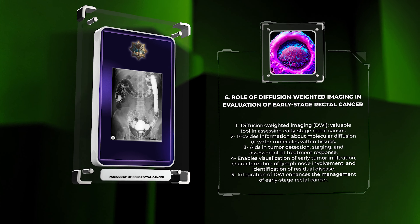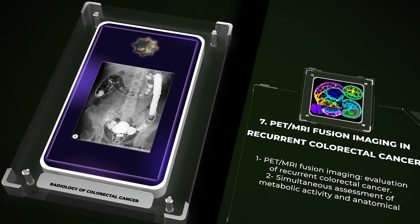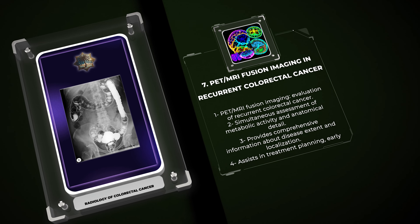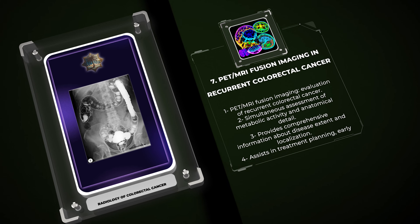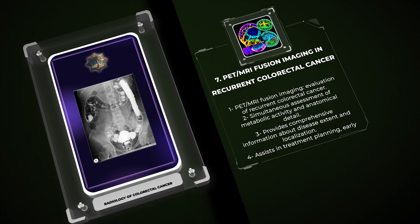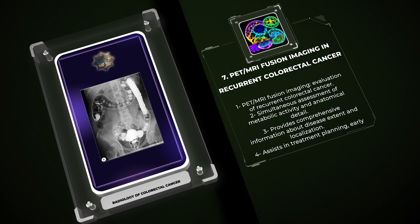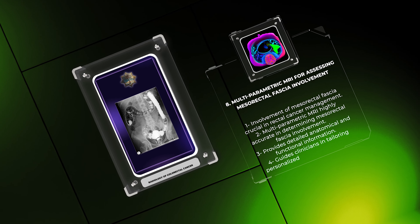The combination of positron emission tomography (PET) and MRI through fusion imaging has emerged as a powerful tool in the evaluation of recurrent colorectal cancer. PET/MRI fusion allows for the simultaneous assessment of metabolic activity and anatomical detail, providing comprehensive information about disease extent and localization. By accurately detecting and characterizing recurrent lesions, PET/MRI fusion imaging assists in treatment planning, facilitates early intervention, and improves patient outcomes.